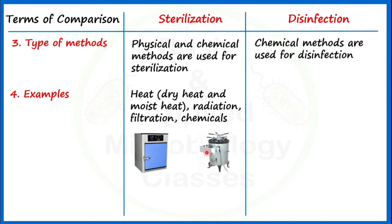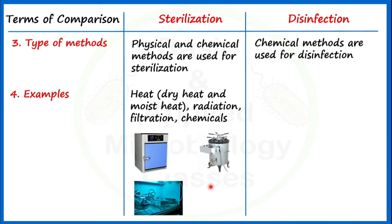Just before this video, I also uploaded a video on the differences between hot air oven and autoclave-based sterilization — dry heat versus moist heat sterilization — that you can also check out. It will further enrich your knowledge. Gamma radiation is very commonly used to carry out sterilization, along with filtration.